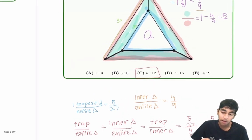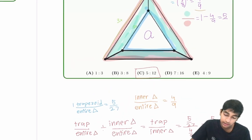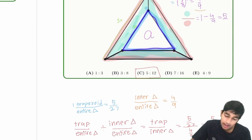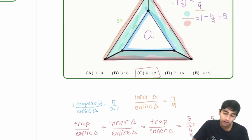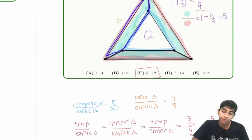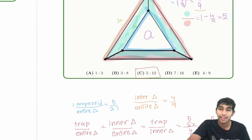The key idea for this problem was noticing the similar triangles between the small equilateral and the big equilateral triangle, and then recognizing that one trapezoid is just one-third of the region in between. Thanks for watching!